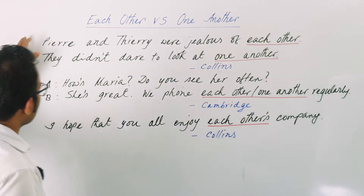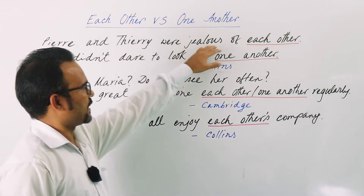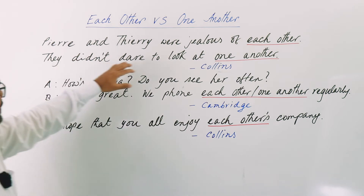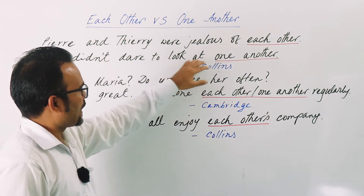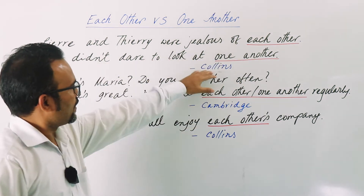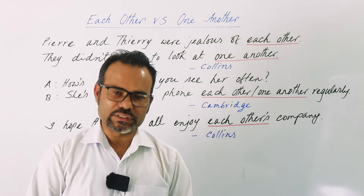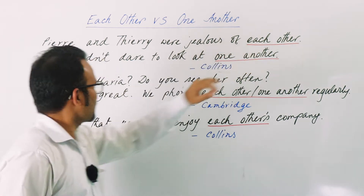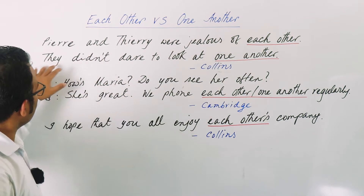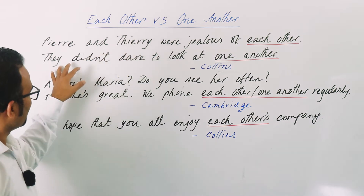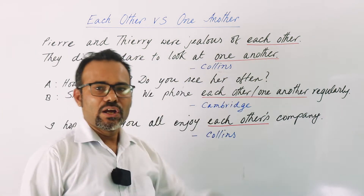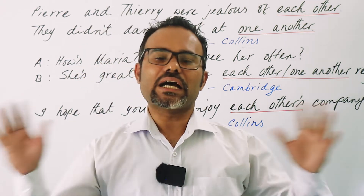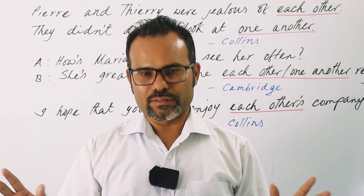The first example from Collins Cobuild is: 'Peary and Theory were jealous of each other.' The second is: 'They didn't dare to look at one another.' So, in the middle of these examples, 'each other' and 'one another' are used interchangeably — there is no strict distinction for native speakers.